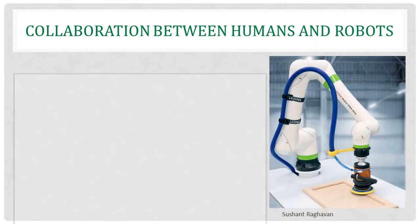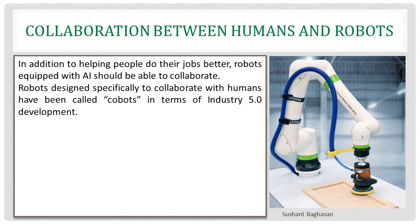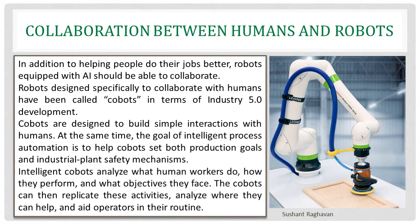Industry 5.0 also enables collaboration between humans and robots. Robots equipped with AI should be able to collaborate with people, and robots designed especially for this purpose have been called cobots in the context of Industry 5.0 development. Cobots are designed to build simple interactions with humans, and the goal of intelligent process automation is to help cobots set both production goals and safety mechanisms. Intelligent cobots analyze what human workers do, how they perform, and what objectives they face — then replicate these activities, analyze where they can help, and aid operators in their routine.